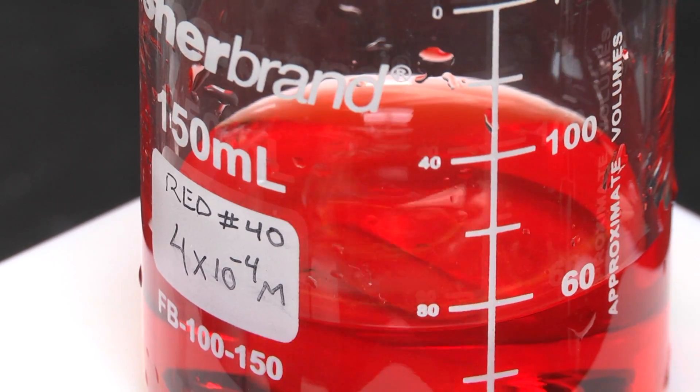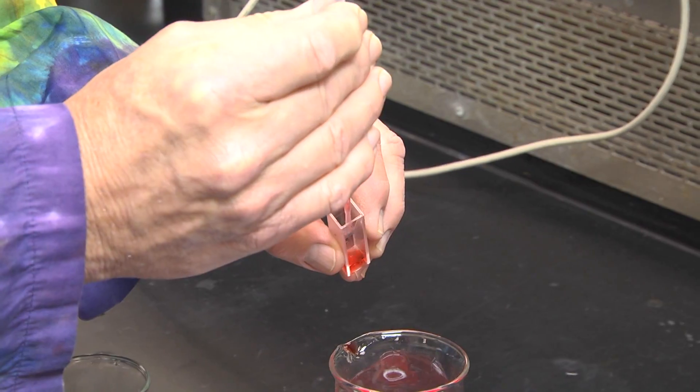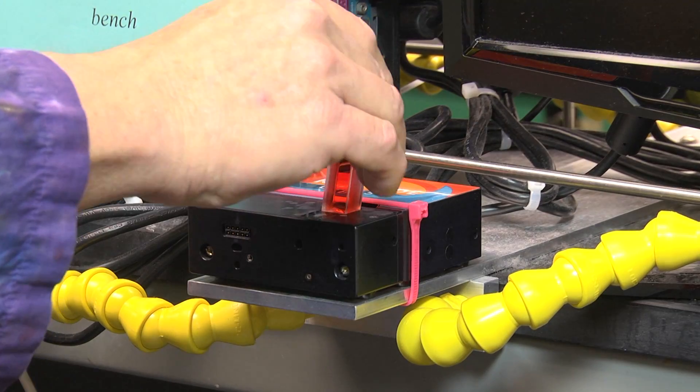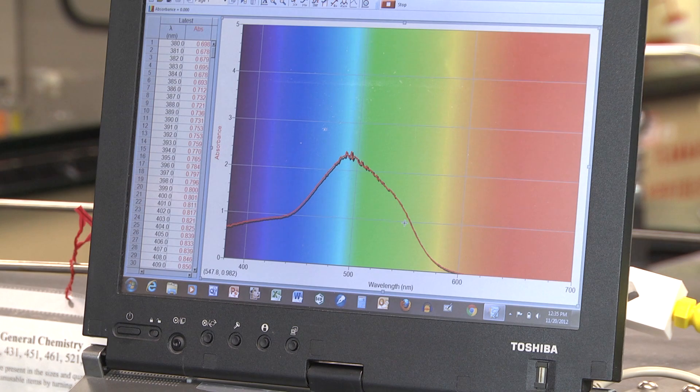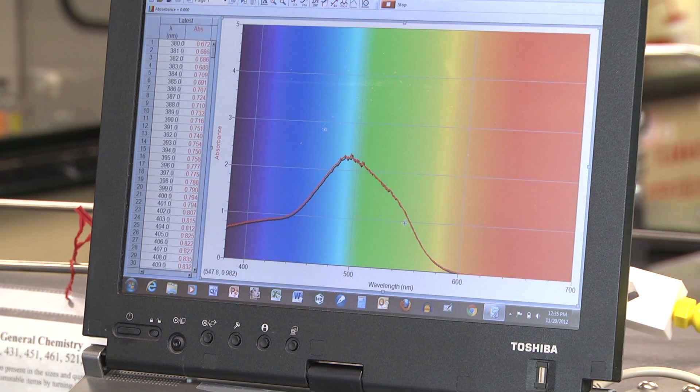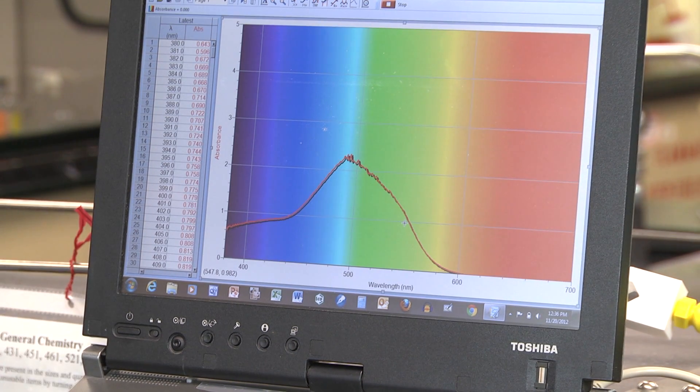In order to follow the dye concentration, the reaction will need to be performed in a cuvette located in a spectrometer. By monitoring the absorbance of the dye, we can use Beer's Law to determine the concentration of the dye.